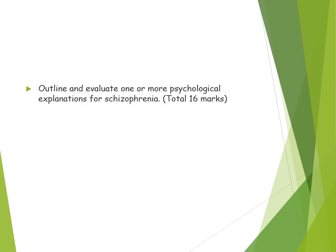For an essay question such as 'Outline and evaluate one or more psychological explanations of schizophrenia' for 16 marks, you can focus solely on the cognitive explanation or discuss both the cognitive and family dysfunction explanations. If you cover both, you'll need to go into less detail on each; covering one allows greater depth. It's a breadth-and-depth trade-off. Make sure you have sufficient detail and maintain the right split between AO1 and AO3, spending more time on the evaluation than the outline, to achieve top band marks.